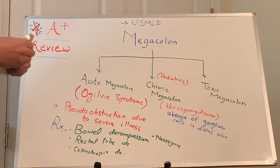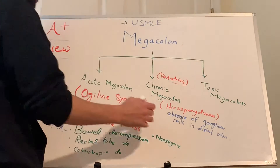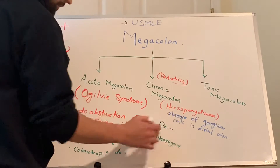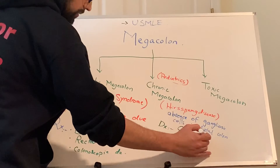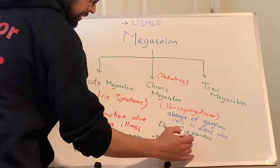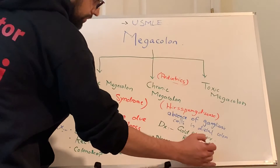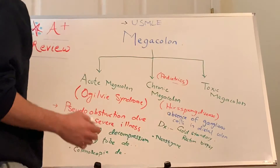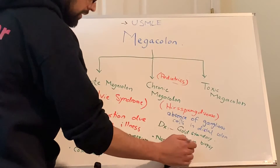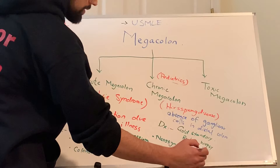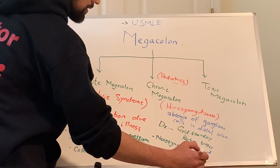How do you diagnose Hirschsprung disease? Always, the best choice and gold standard is rectal biopsy. How do you treat it? The treatment is surgical resection — we are removing the affected part.